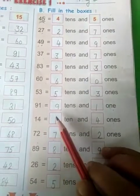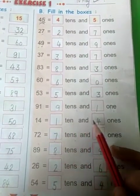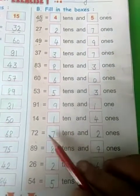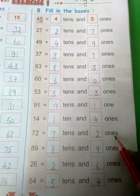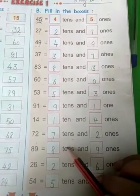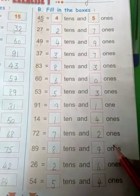14. 1 ten and 4 ones. 72, 7 tens and 2 ones. 89, 8 tens and 9 ones.